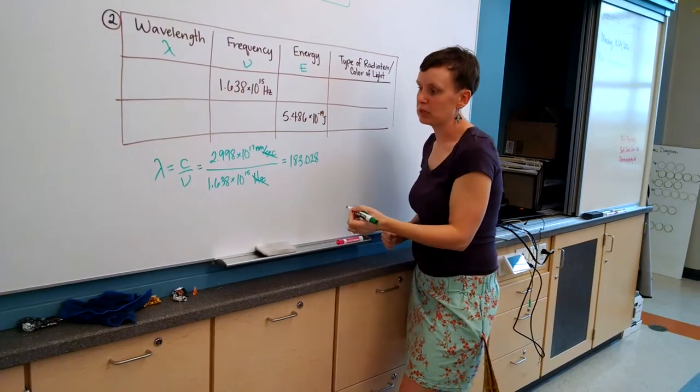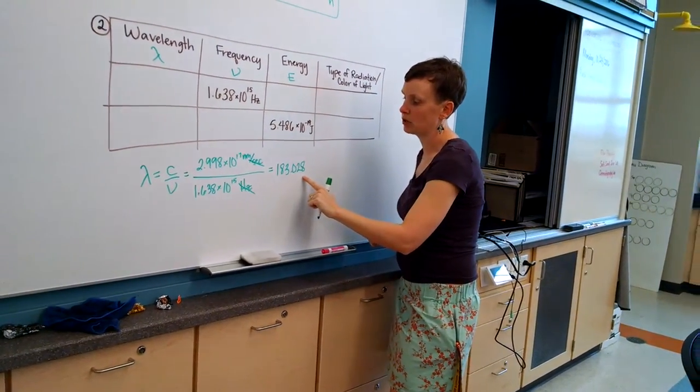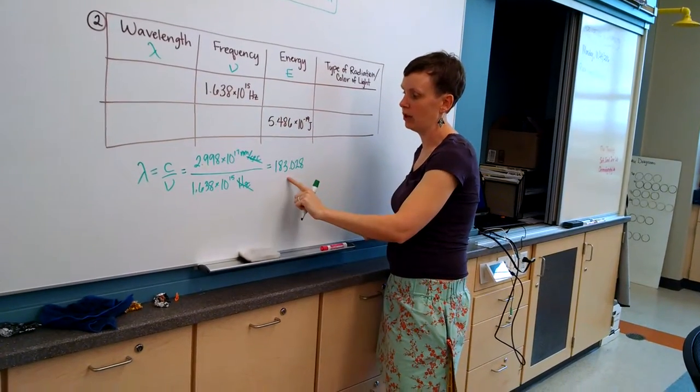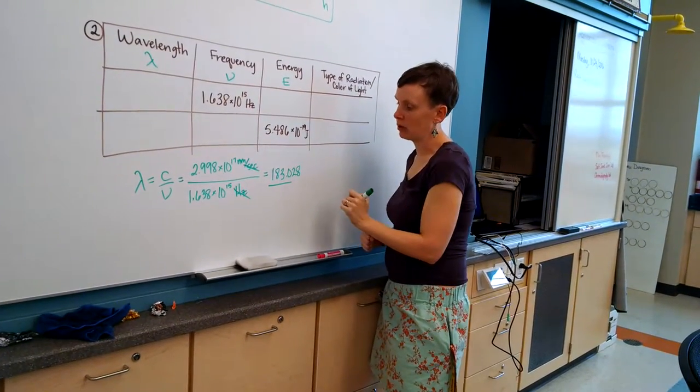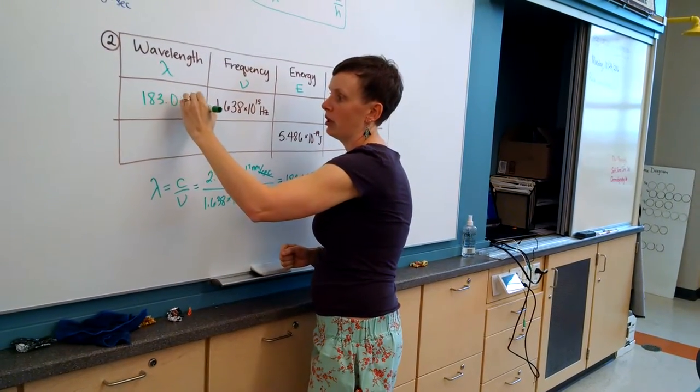For sig fig purposes, this has 4 sig figs, this also has 4 sig figs, so I need to round my answer to 4 sig figs when I put it in the table. So I'm going to round it to 183.0 and write that up here, 183.0 nanometers.